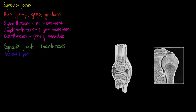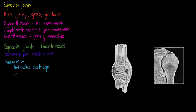Generally there are six main features that we can use to describe the synovial joints. The first is the presence of articular cartilage on the surfaces of the bones. We're also going to have a joint cavity, an articular capsule, synovial fluid within the joint cavity, reinforcing ligaments, and also nerves and blood vessels.